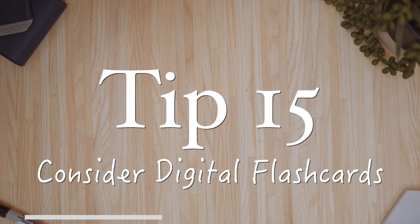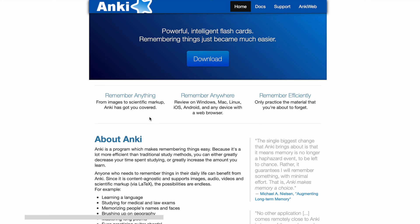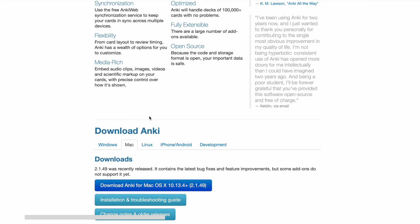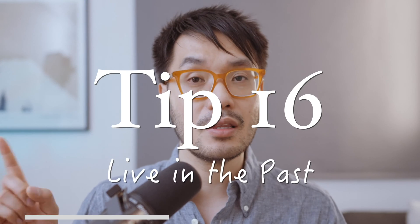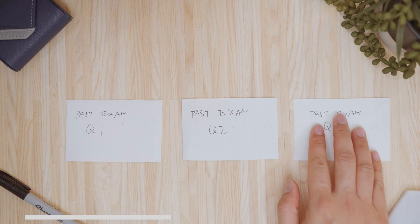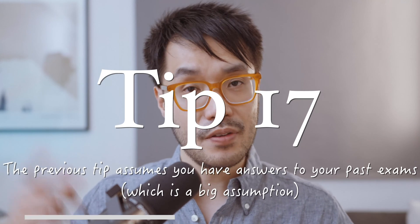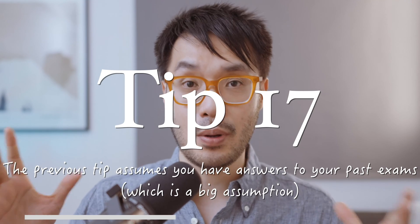Tip 15: consider digital flashcards. Anki is the most popular app for this—you can keep flashcards on your phone so you can test yourself anywhere, anytime, and it shows you questions in order based upon when you answered correctly last, so it's very convenient for built-in spaced repetition. Tip 16: live in the past. Take all the questions you can find from past exams and any relevant parts of the textbook and make each one into a flashcard, so you can be sure what you're revising aligns with what your professor has tested in the past.